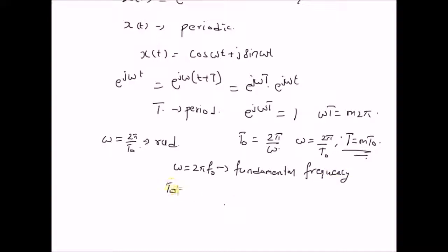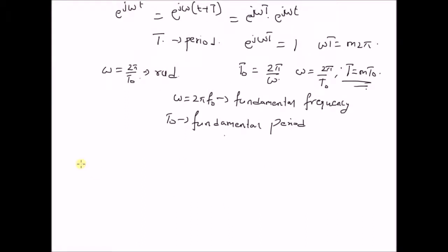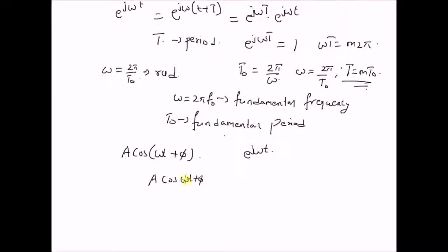And T₀ is the fundamental period. A popular signal studied in signals and systems has the structure A times cos(ωt + φ). This signal is directly related to e^(jωt) as follows: A times cos(ωt + φ) equals A times the real component of e^(j(ωt + φ)).